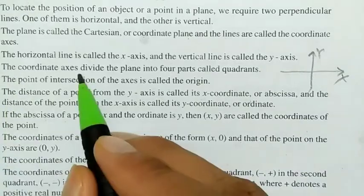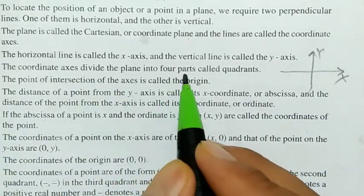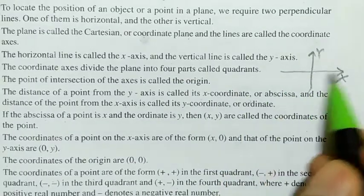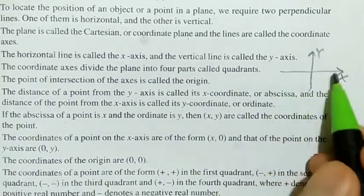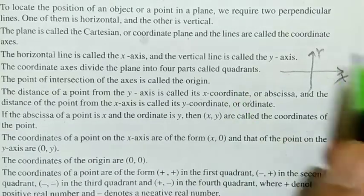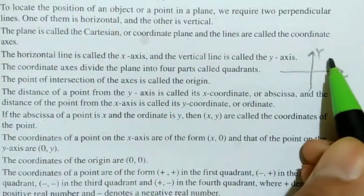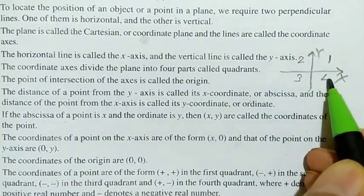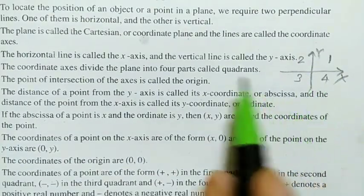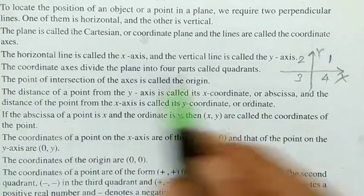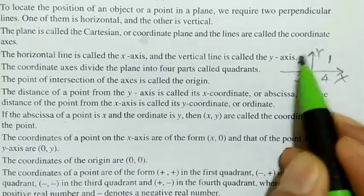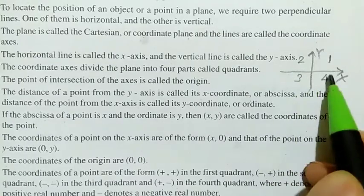The coordinate axes divide the plane into four parts. This plane is divided into four parts — the first part, second part, third part, and fourth part. These are called quadrants: this is the first quadrant, this is the second quadrant, this is the third quadrant, and this is the fourth quadrant.